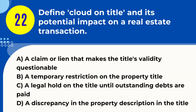Question 22. Define cloud on title and its potential impact on a real estate transaction. A. A claim or lien that makes the title's validity questionable. Answer: A. A cloud on title is any claim, lien, or encumbrance that might invalidate or impair the title to real property or make its legality uncertain. It can complicate the sale process and needs to be resolved before a clear title can be transferred.